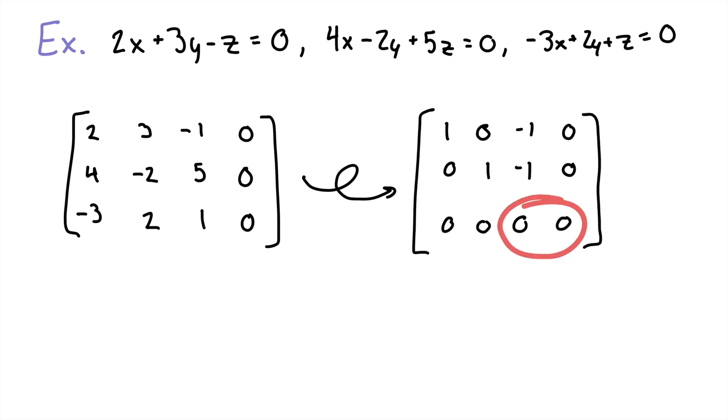Now as you can see right here, we'd be left with 0 equals 0. So now we're going to have an infinite amount of solutions. Looking at our pivot columns, the first and second columns have pivot positions, but the third one doesn't, so we're going to have a free variable here.